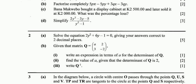Welcome to JS Production. In this video I'll share with you the answer of question 2a, Mathematics First Paper of 2015. The question reads: solve the equation 2y squared plus 6y minus 1 equals 0, giving your answers correct to two decimal places.